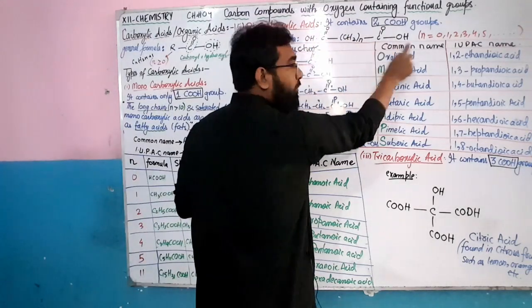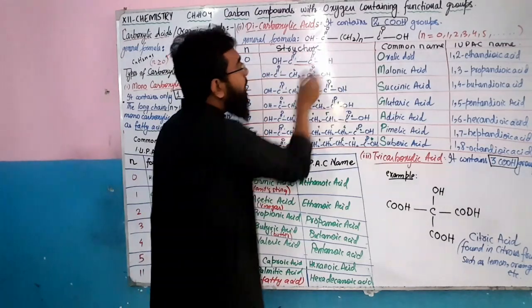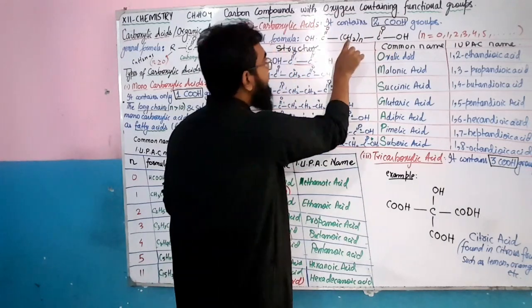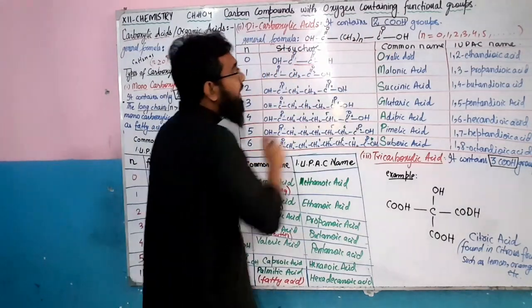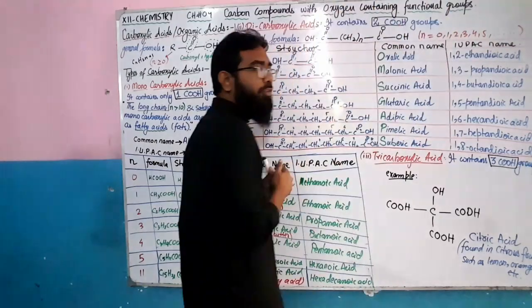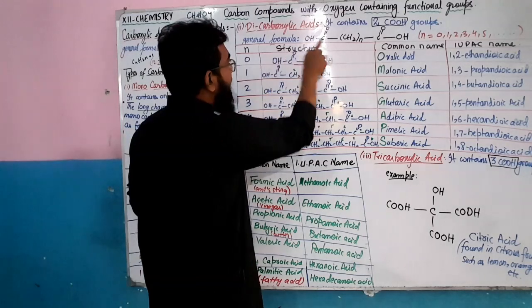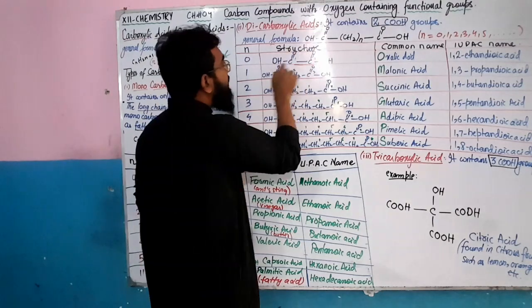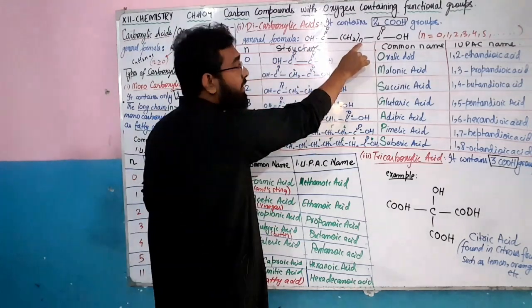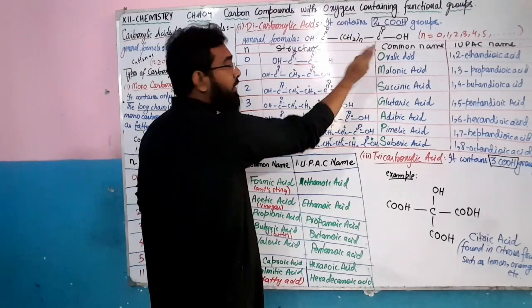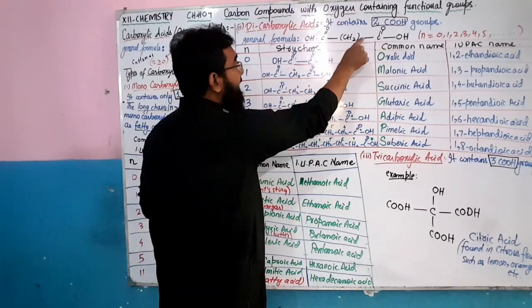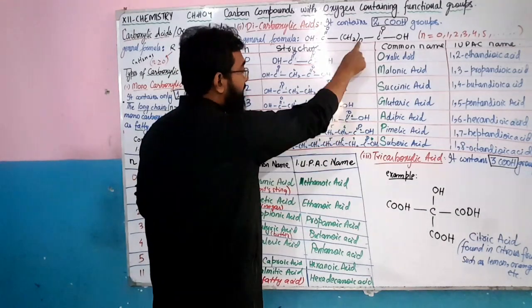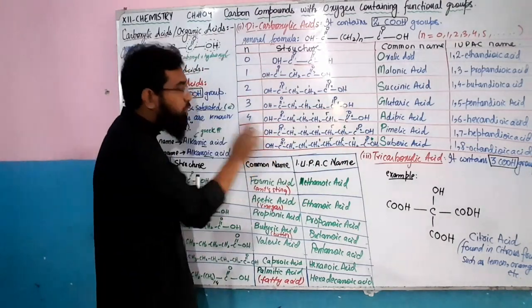The general formula for dicarboxylic acid is HOOC-(CH2)n-COOH, with one COOH at each end and a carbon chain in between. When n equals 0, there is no CH2 in between — just the two COOH groups directly. n=1 gives one CH2, n=2 gives two CH2 groups, n=3 gives three, n=4 gives four, n=5 gives five, and so on. These are all dicarboxylic acids because each compound has two COOH groups.